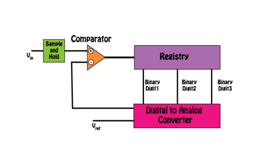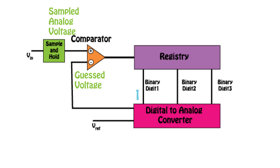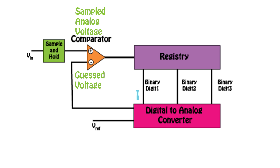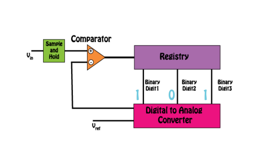A successive approximation converter guesses one bit of a binary number at a time. A diagram for a 3-bit encoder looks like this. The successive approximation registry makes a guess at the binary number corresponding to your voltage value. It is then sent to a digital-to-analog converter, which converts this binary value into a voltage. This voltage is then compared to the incoming analog signal that's being sampled. The comparator tells the registry if the guess voltage is higher than or lower than the sampled voltage. Then it moves down the line to the next bit. When all the values have been checked, the registry sends the binary number out and the registry itself resets.